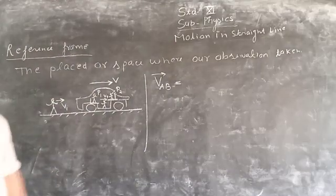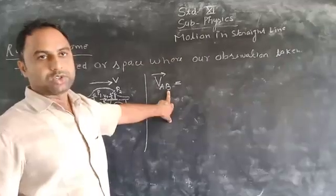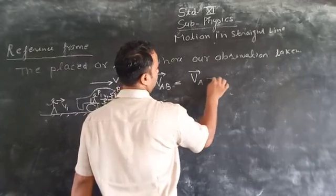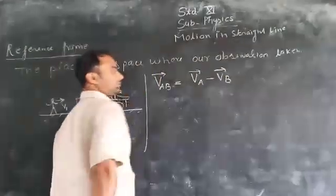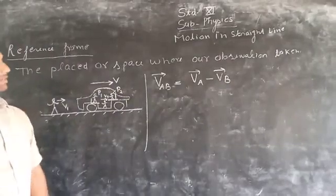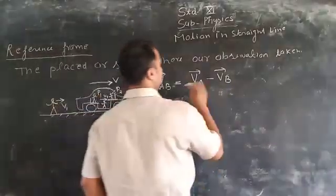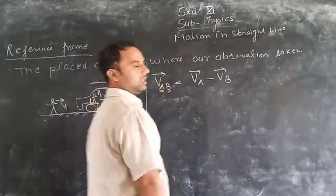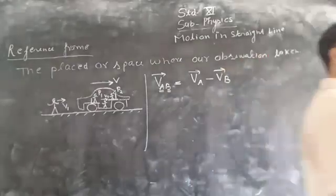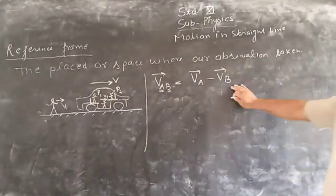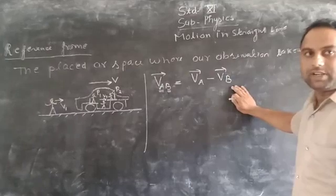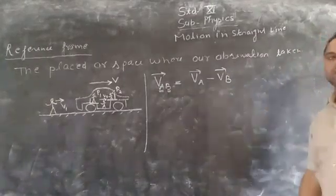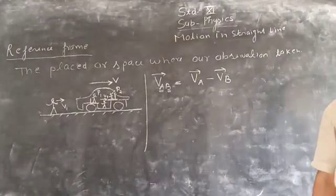Velocity of A with respect to B — we simply use the formula: velocity of A minus velocity of B. This is the basic formula. It means we are sitting on the B reference frame and seeing the object A. If we are sitting on the reference frame, then the velocity of that reference frame will be zero.